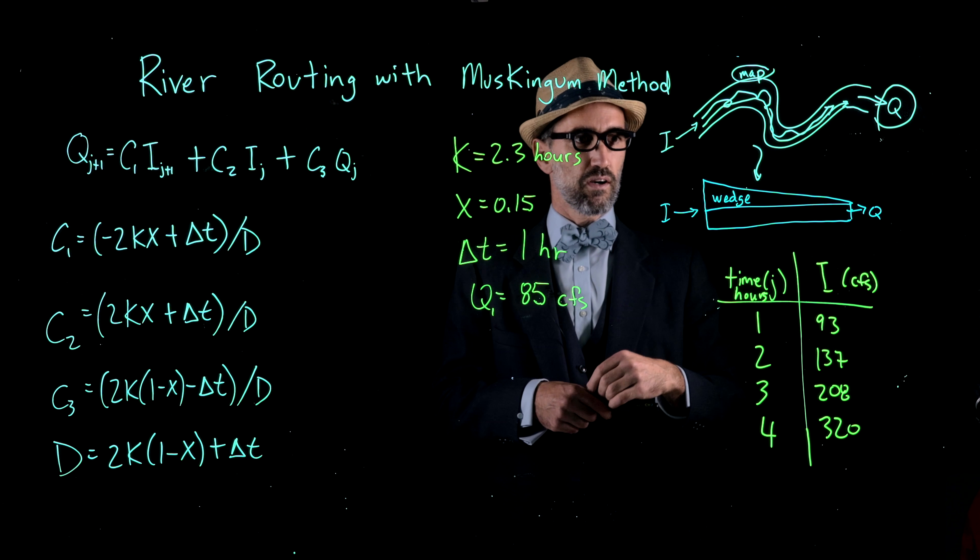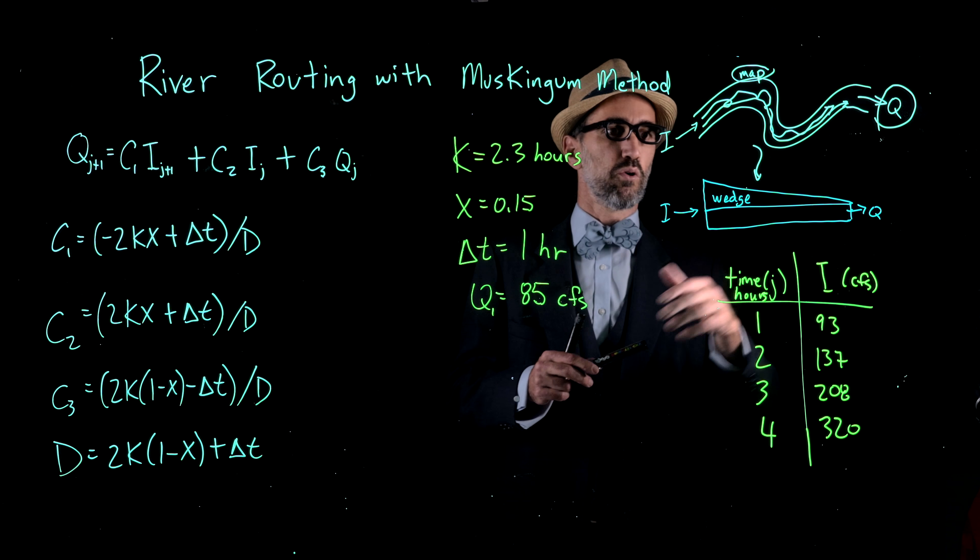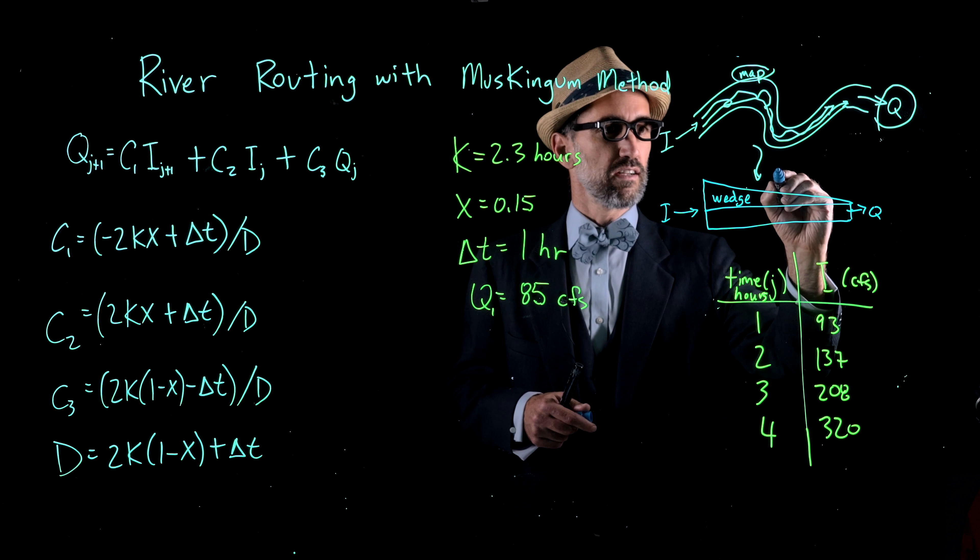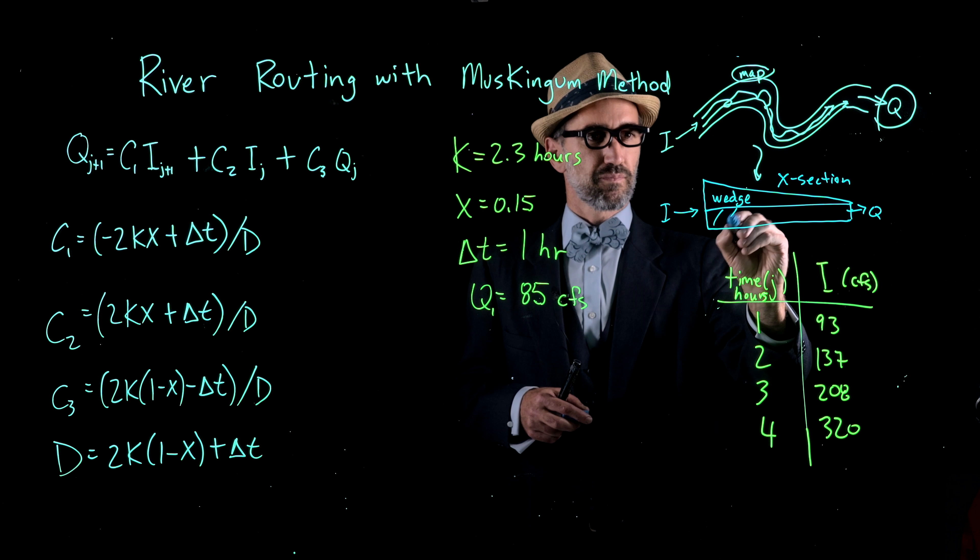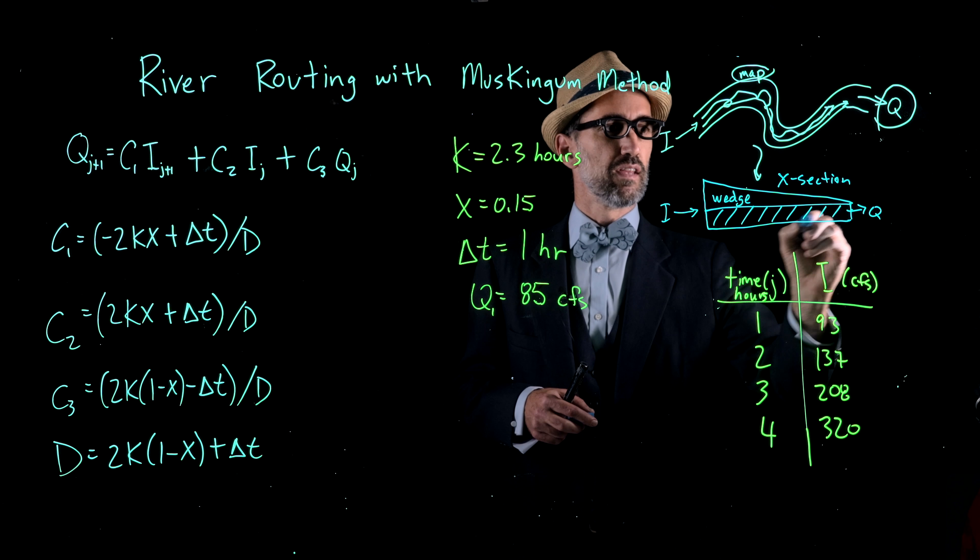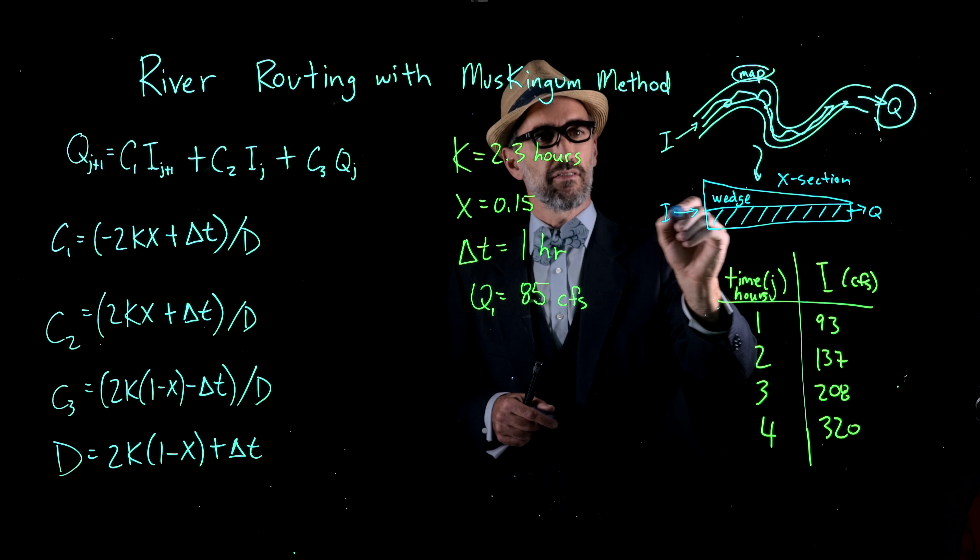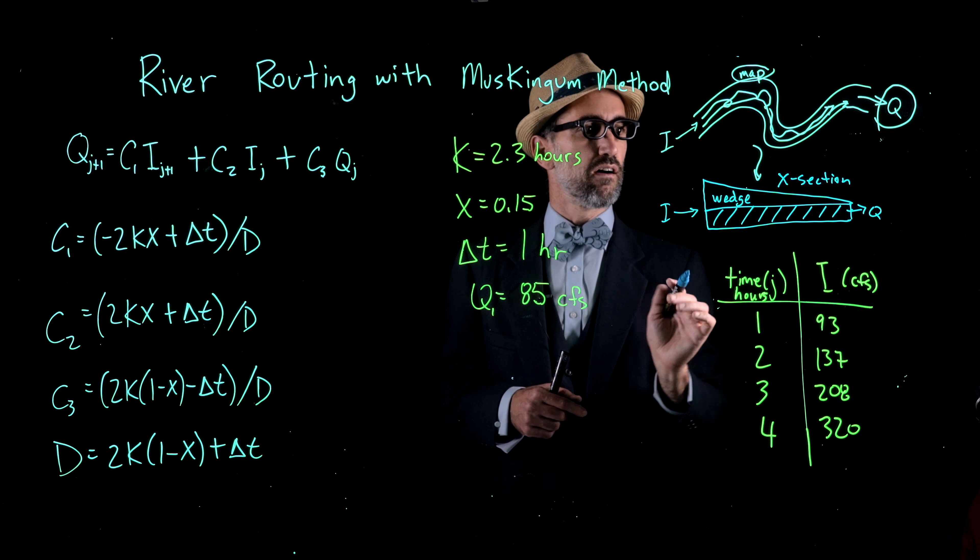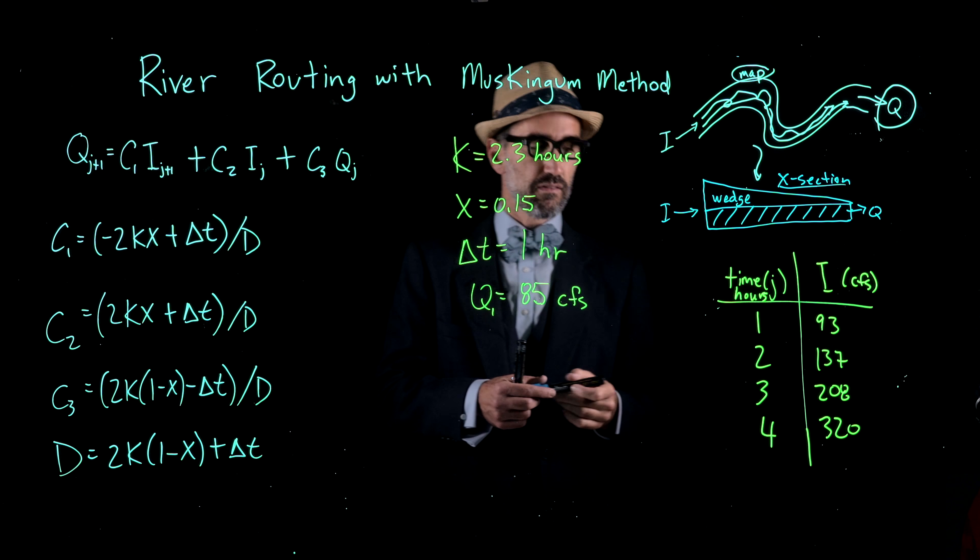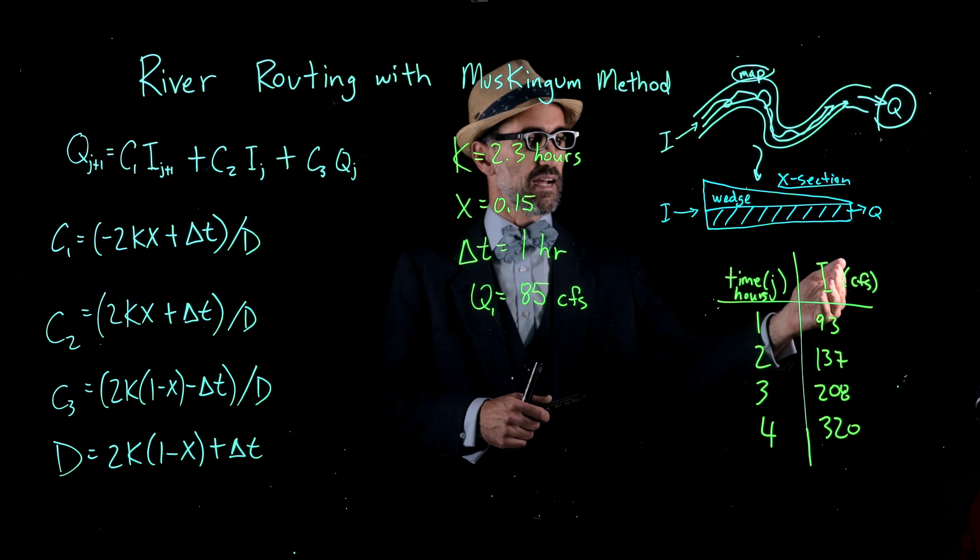In the Muskingum method we're assuming that we don't just have a level pool. This is a cross section here. We have what's called wedge storage, which is above the level pool storage. We have this input function I to this reach of the stream and an output that we're trying to solve for Q in the next time step.